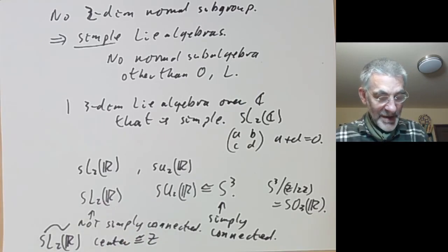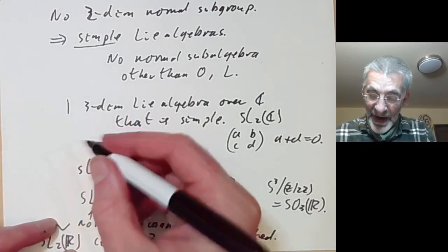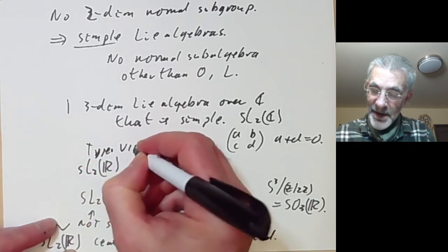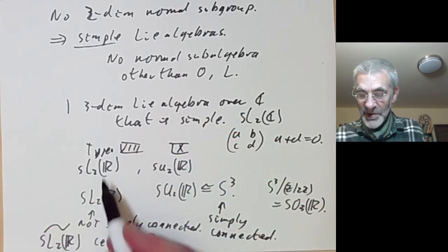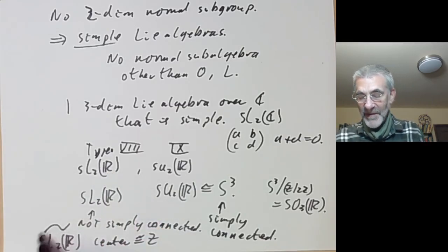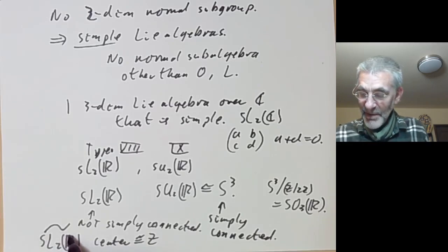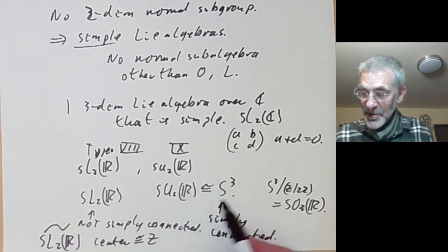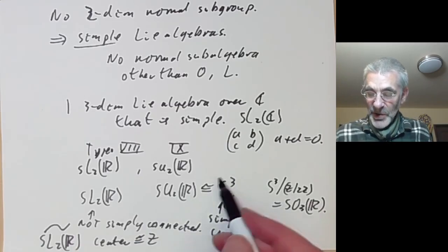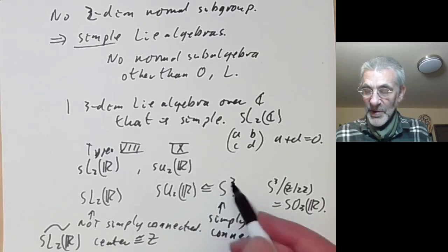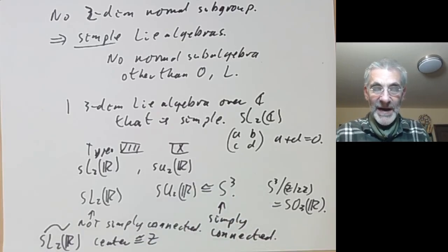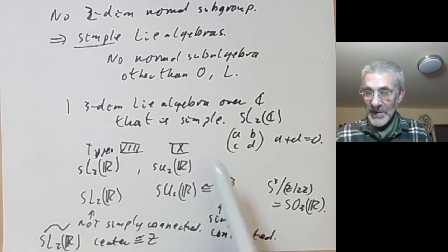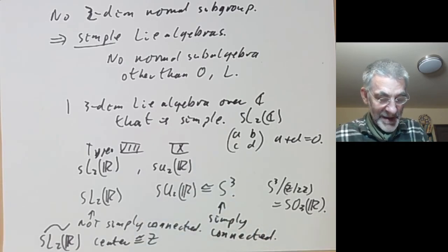These correspond to Bianchi types 8 and 9 and to two Thurston geometries: the universal cover of SL₂(R) geometry (named so because no one could think of a better name), and spherical geometry. A notable example of a manifold with spherical geometry is S³, and the Poincaré conjecture asks whether this is the only simply connected compact three-manifold — finally answered by Perelman after about a century of attempts.